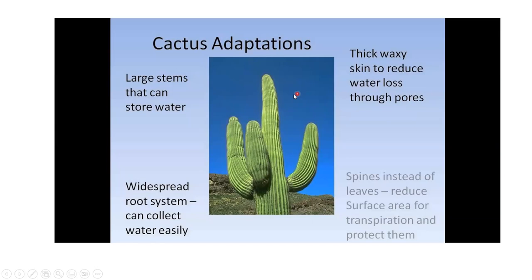The cactus adapts in an entirely different environment. A cactus has a large stem that stores water and thick waxy skin to reduce water loss through pores. These adaptations help it survive in the desert but wouldn't be useful if transplanted to a polar region. Similarly, a polar bear wouldn't survive in the desert because its adaptations are suited to that specific environment.